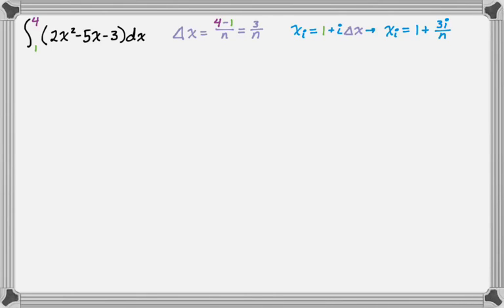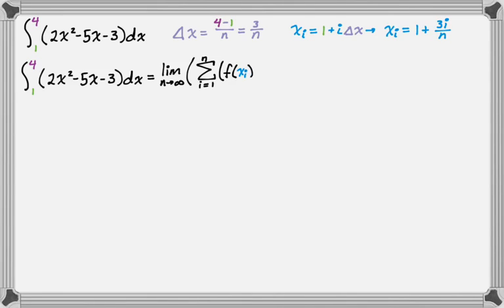Once we know those things, we can get started. The definite integral is the limit as n approaches infinity of the sum of all the rectangles. The rectangles are base times height. The base is delta x, the height is f(x sub i). So it's the sum from one to n of f(x sub i), which is the height, times delta x, which is the width. When we take that limit, it'll give us the value of the integral.